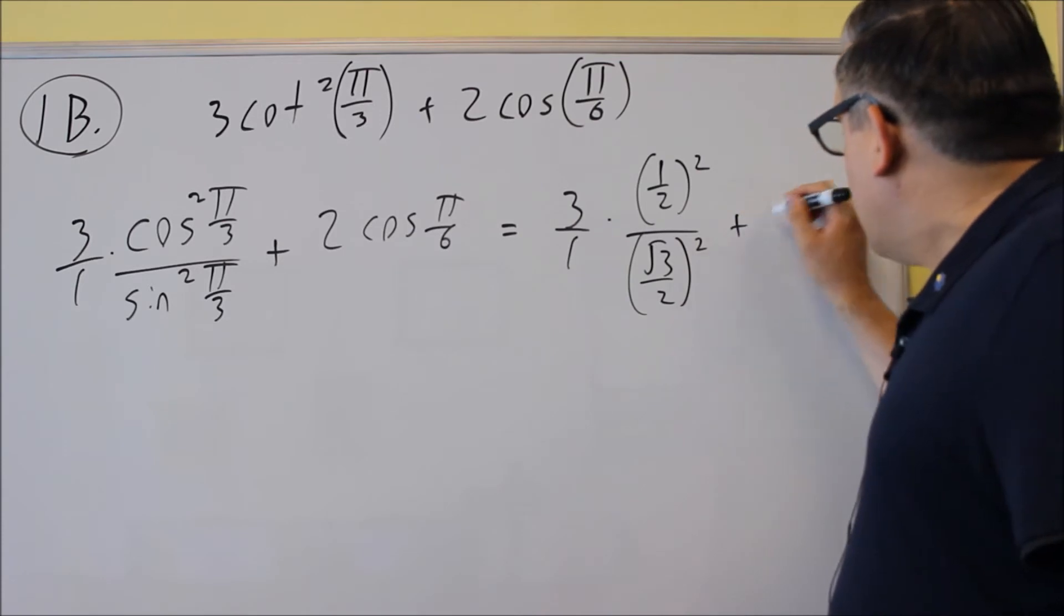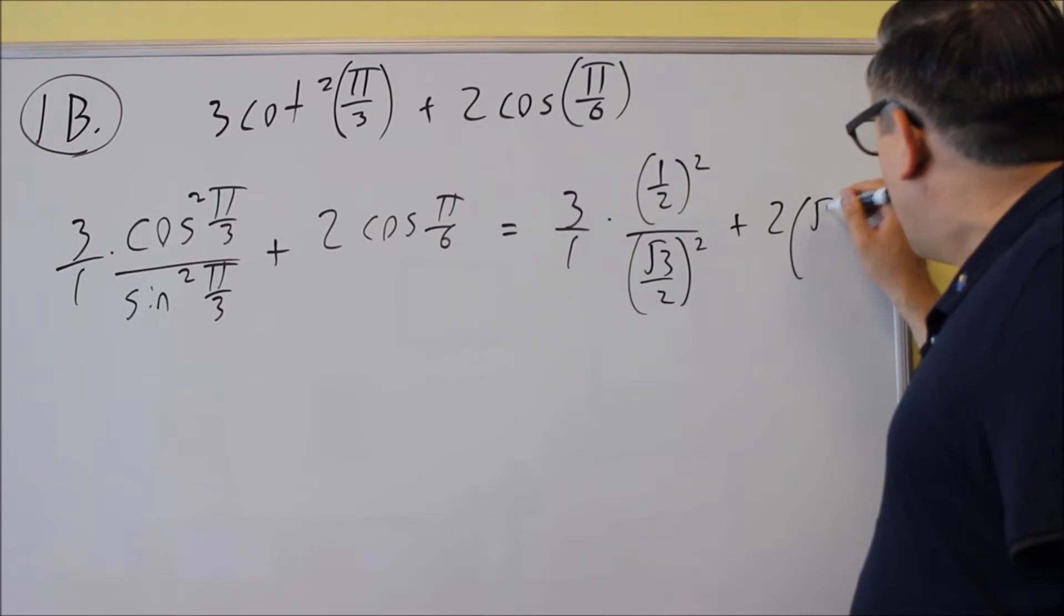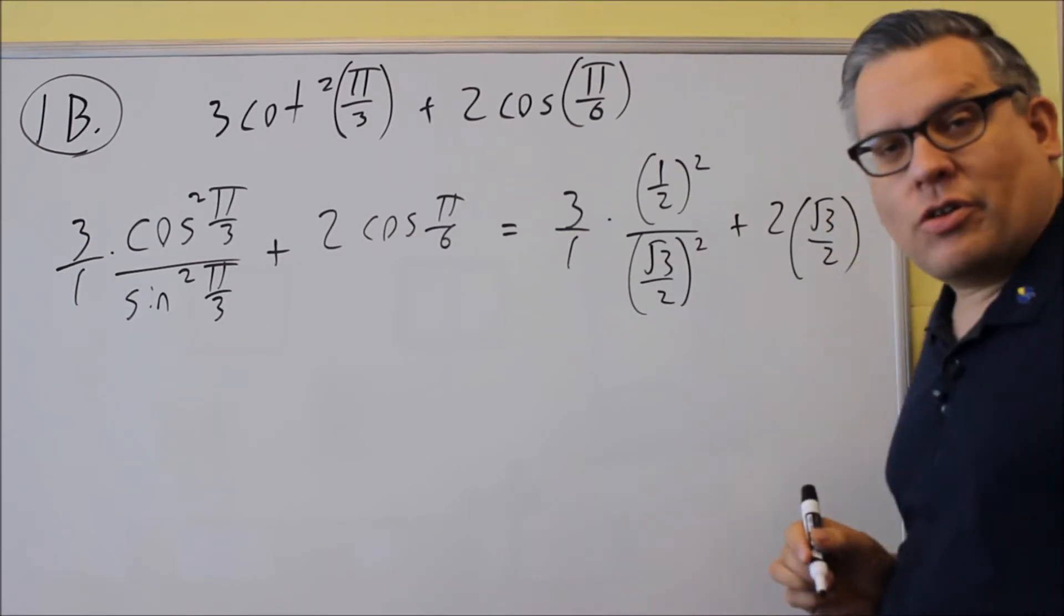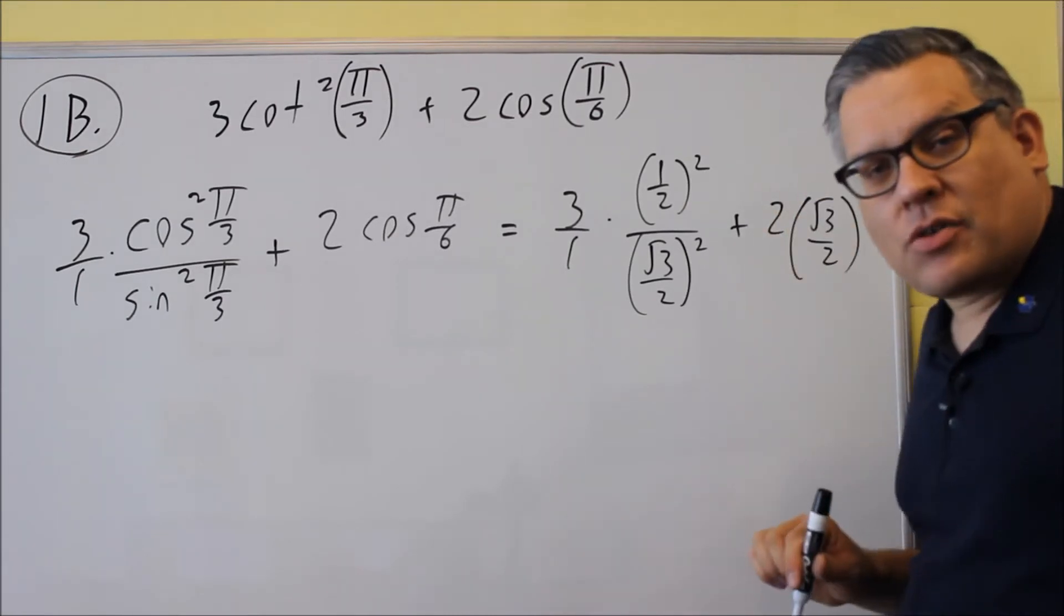Then we have plus 2 and then the value for cosine pi over 6 is going to be square root of 3 over 2. So now we have all the values that are put in from the unit circle and we just have to now simplify.